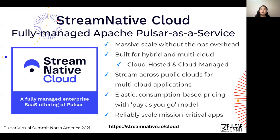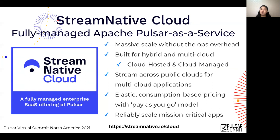If you would like to deploy and access Pulsar clusters on public clouds, Stream Native Cloud is right for you. It's a fully managed Apache Pulsar-as-a-service, supporting massive-scale deployments without the ops overhead so your team can focus on business logic. It's built for hybrid and multi-cloud strategies, supports elastic consumption-based pricing with a pay-as-you-go model to save total cost of ownership, and can reliably scale mission-critical applications. You can find both products on StreamNative.io.